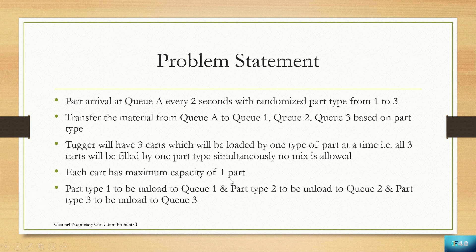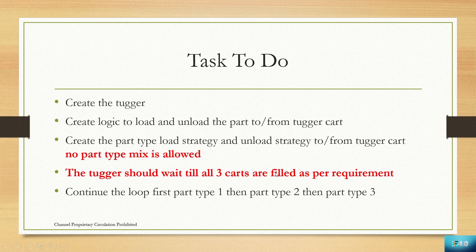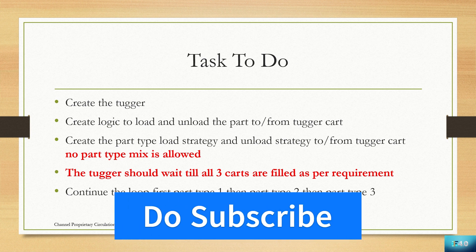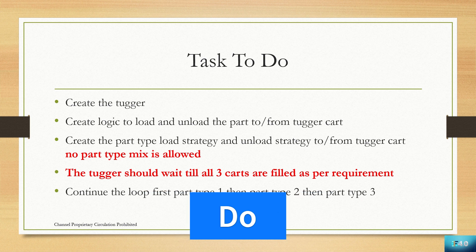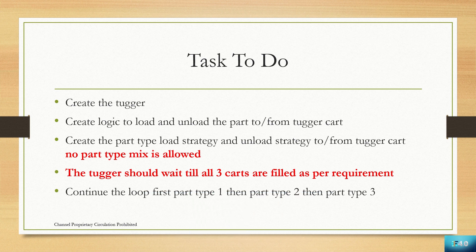We need to create a card such that its maximum part capacity is one — the card should not take more than one part at a time. Part type 1 should be transferred to Q1, part type 2 to Q2, and so on. We need to create a Tugger and then create logic to load and unload parts to and from the Tugger cards.